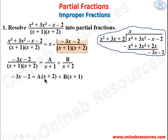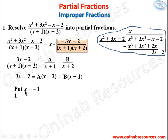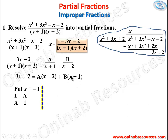To find A, we set x + 1 = 0, giving x = −1. Substituting: −3(−1) − 2 = 3 − 2 = 1, and A(−1+2) = A(1) = A. The B term becomes 0. Therefore A = 1.